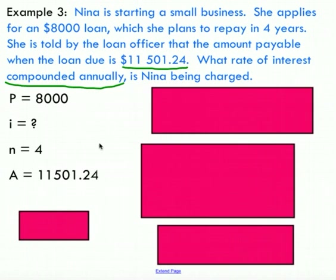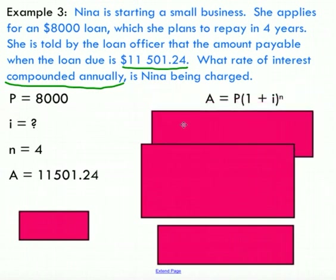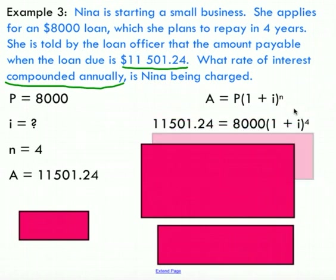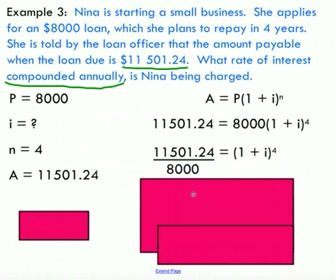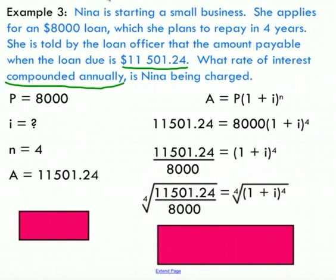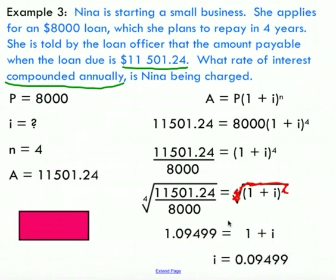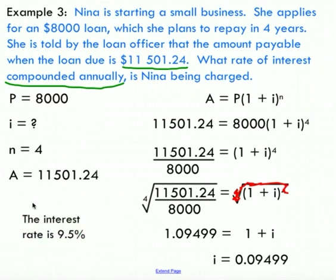This is a different type of problem where we solve for the interest rate i. After substituting known values into the formula, we need to unbury i. First, divide both sides by 8,000. Then, to eliminate the exponent of four, take the fourth root of both sides — the fourth root and the exponent of four cancel out. Finally, subtract one from both sides to isolate i. Remember that the interest rate will be expressed as a decimal; converting to a percentage, she's being charged 9.5% interest.